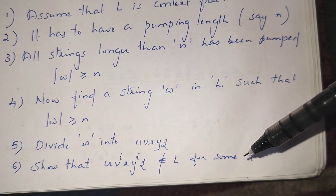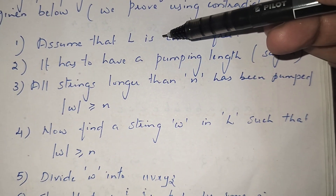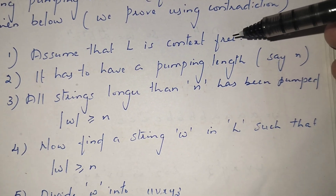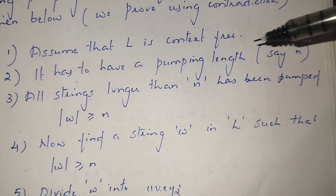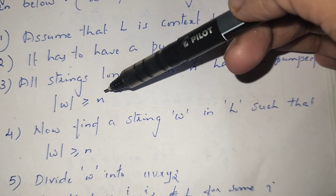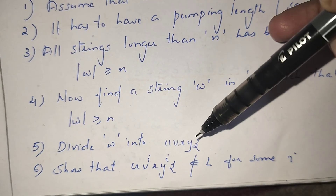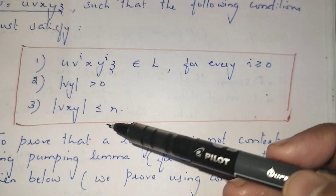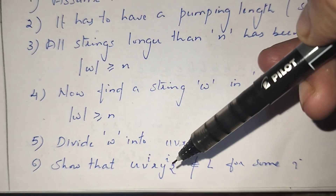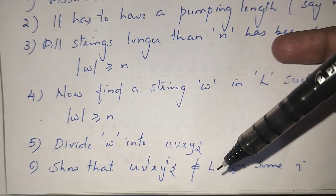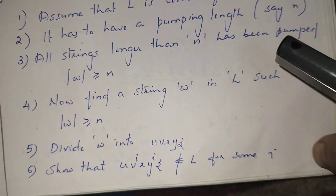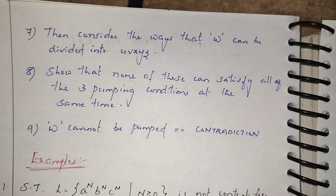The steps are: first, we assume that L is context-free. At the end we will show a contradiction — that this assumption is wrong. So we start with the assumption that language L is context-free, which means it must have a pumping length n. We take a string whose length is greater than or equal to n, divide it into five parts, and try to satisfy the conditions. We then show that after pumping the string is not in the language, proving our assumption is wrong.